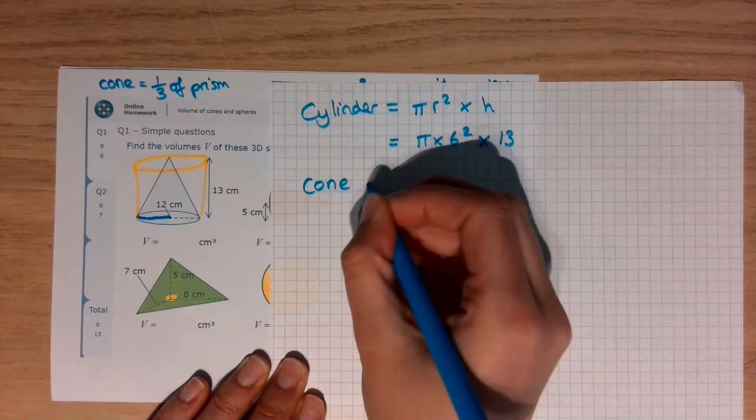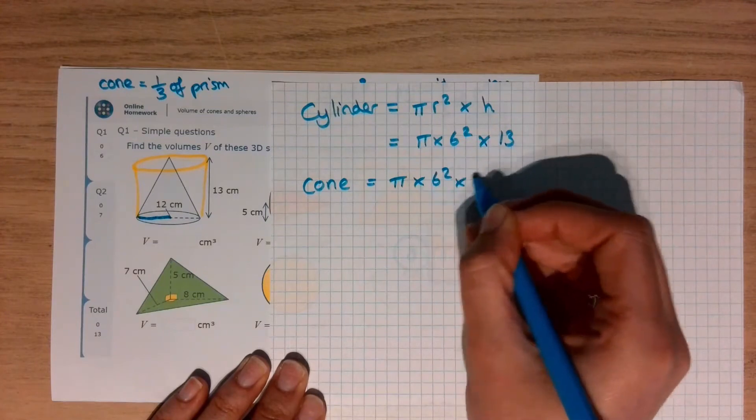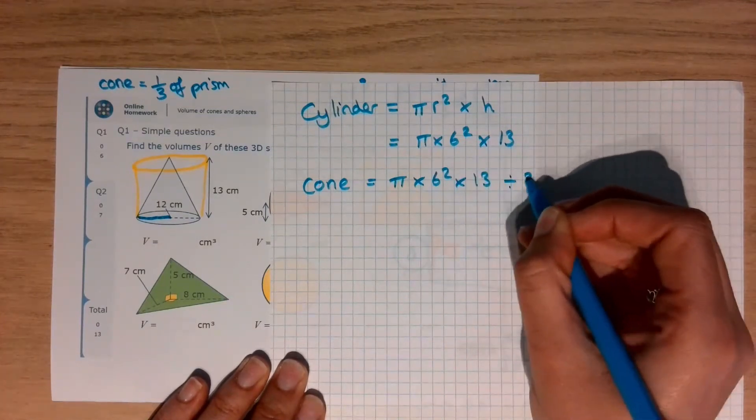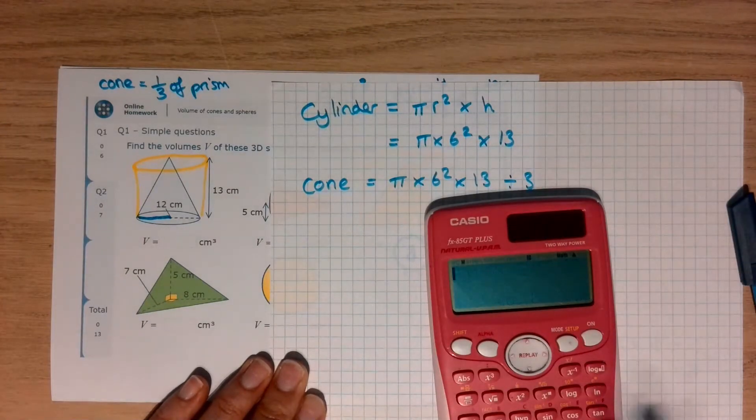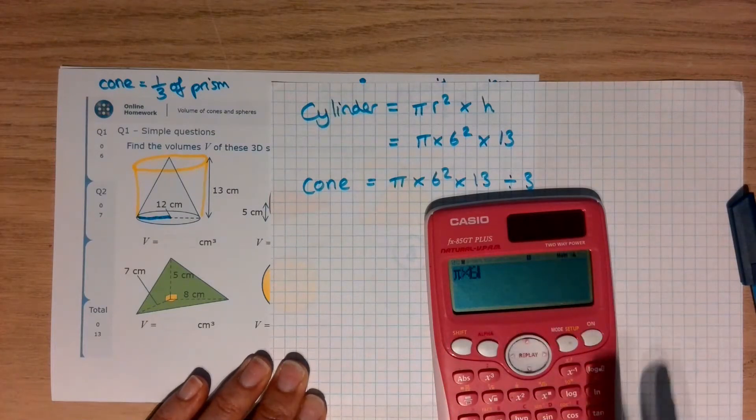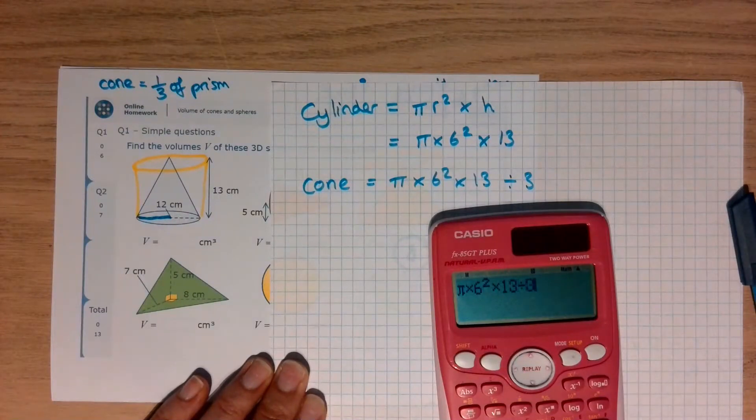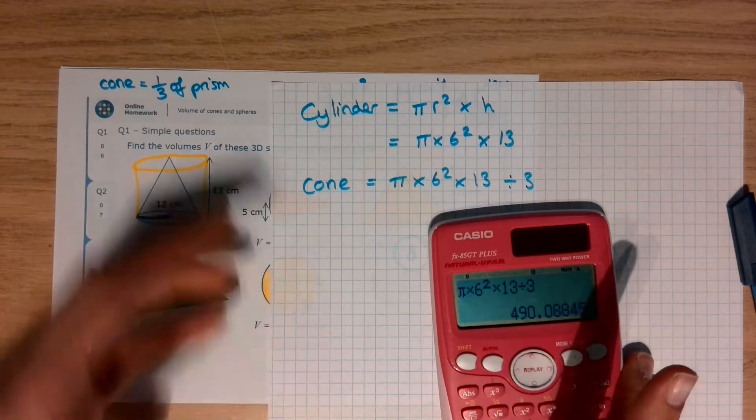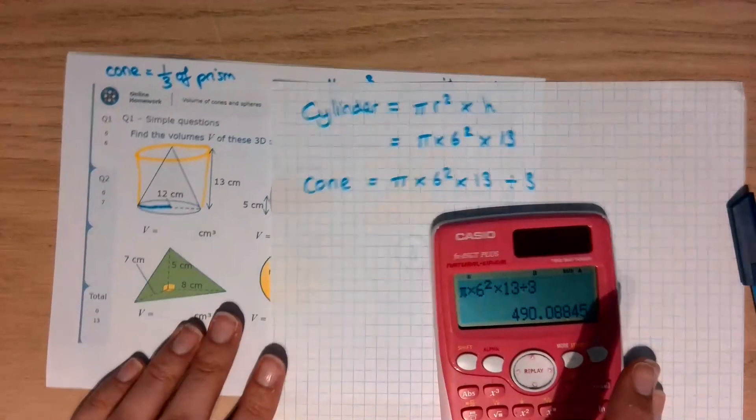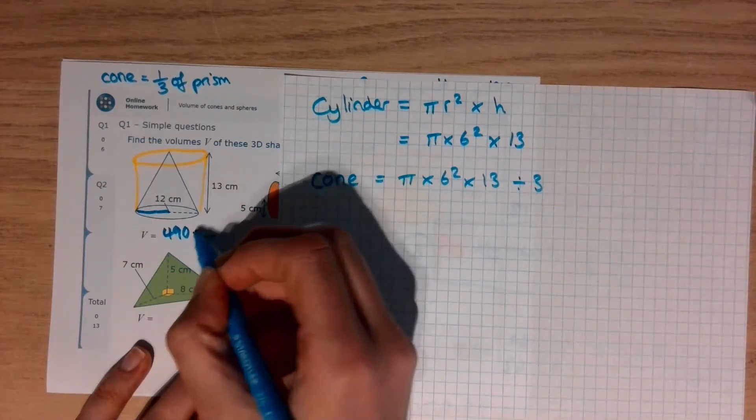Which means that the cone is pi times 6 squared times 13 divided by 3. And that's what I'm going to put in my calculator. So, I've got pi times 6 squared times 13 divided by 3. That gives me 156 pi. It doesn't want that. It wants it to decimal places. So, press S-R-O-D and we want it to 1 decimal place. That's going to be 490.1.